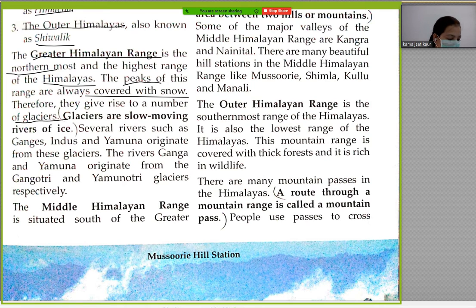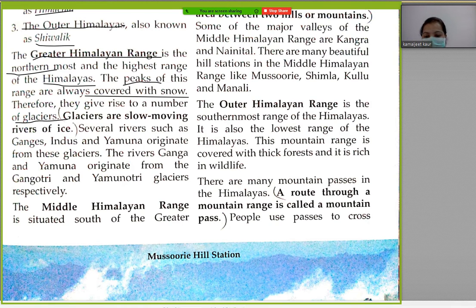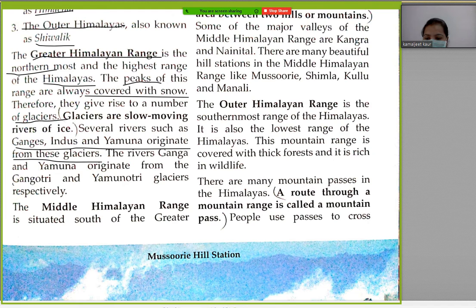A glacier is a slow-moving mass or river of ice. Glaciers form when snow remains in one location long enough to transform into ice — when snow accumulates over a long time it begins to move like a river, and that is called a glacier. Several rivers such as Ganga, Indus, and Yamuna originate from these glaciers. The rivers Ganga and Yamuna originate from Gangotri and Yamunotri respectively.